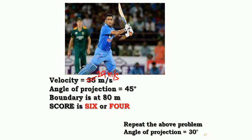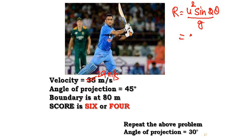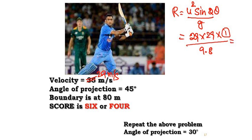What is the range formula? R equals u squared times sine 2-theta divided by g. Just substitute it here: 29 into 29 into sine of 2 times 45, which is sine 90. Sine 90 is 1, divided by 9.8. If you do this problem, you get the answer as 85 meters.